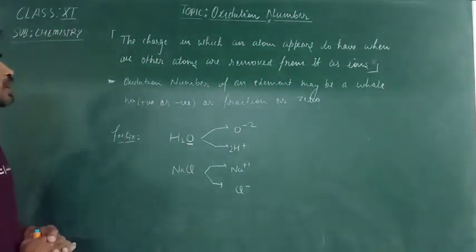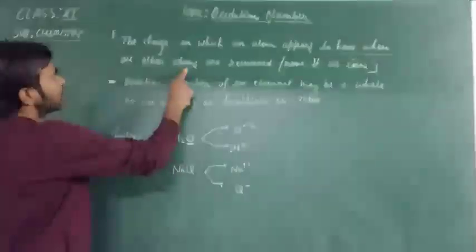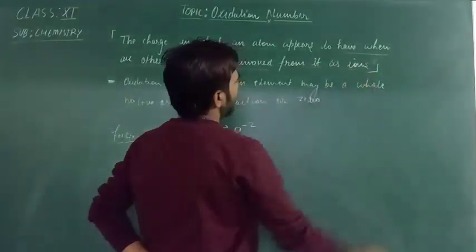Oxidation number is the charge which an atom appears to have when all the other atoms are removed from it as ions.